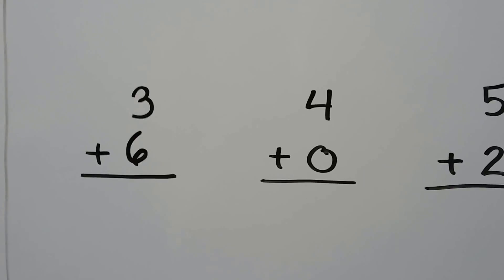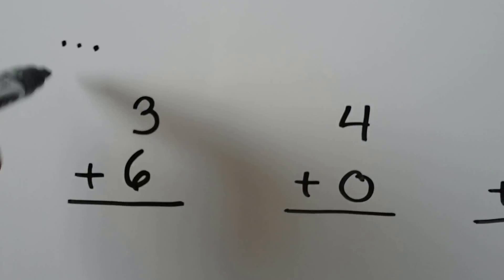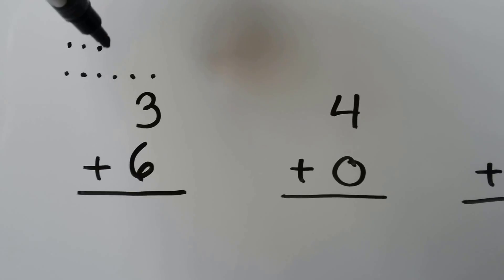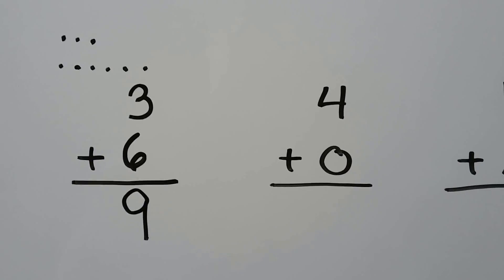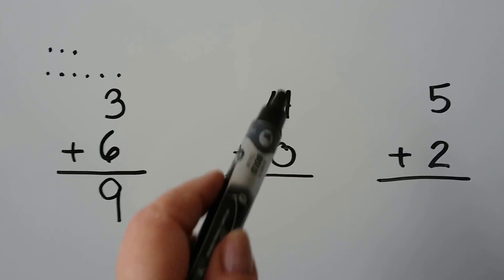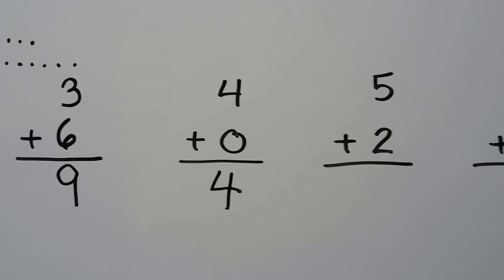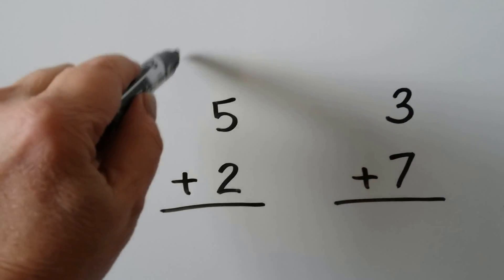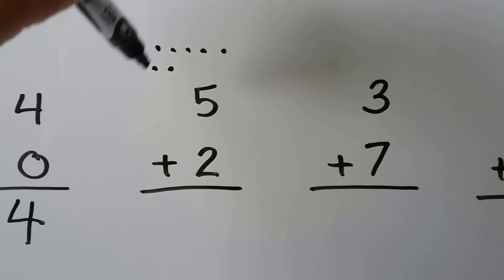How about three plus six? If that's hard to do, we can use dots — one, two, three, and one, two, three, four, five, six. We can add them up — one through nine. Three plus six is equal to nine. How about four plus zero? Remember, any number that has zero added to it stays the same. So this is just going to be a four. Four plus zero is equal to four. What about five plus two? We can make dots — one, two, three, four, five, and two more — six, seven. Five plus two is seven.